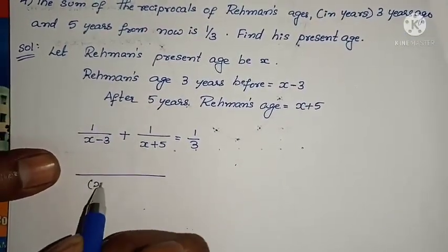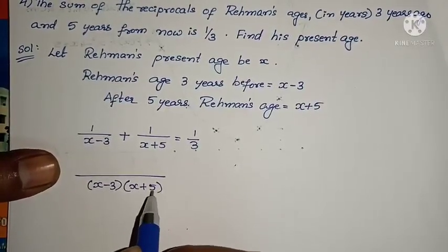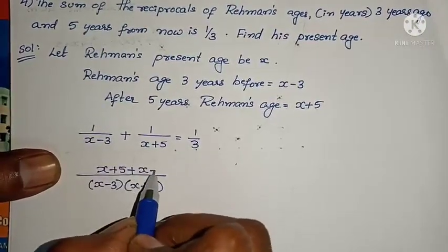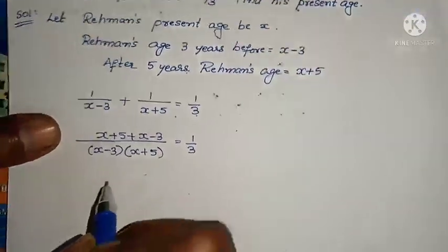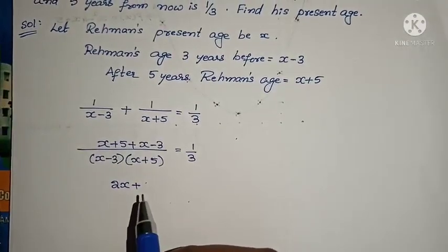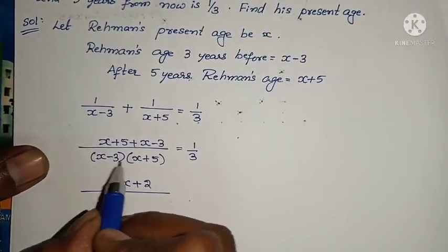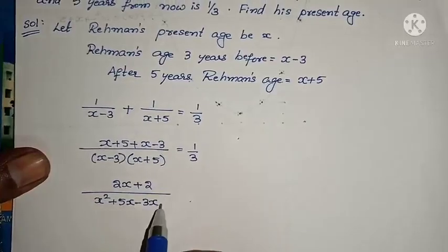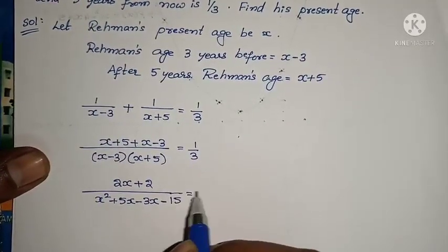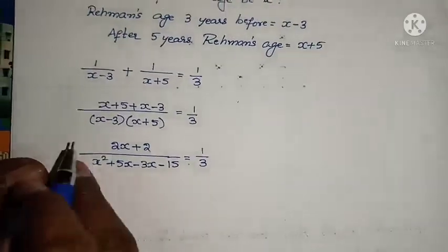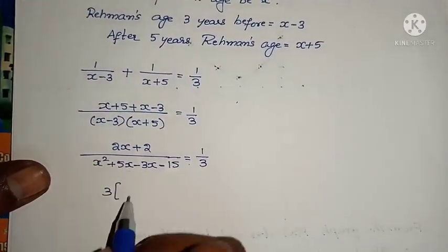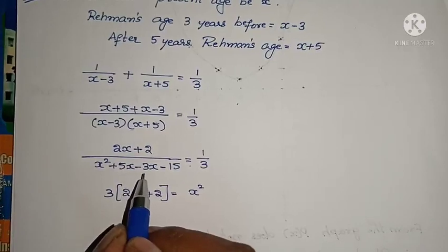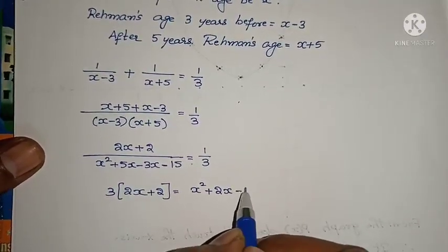Take LCM here. (X minus 3) into (X plus 5) as denominator. Numerator becomes X plus 5 plus X minus 3, which equals 2X plus 2. This equals 1 by 3. Now expand the denominator: X squared plus 5X minus 3X minus 15. Cross multiplication gives 3 into (2X plus 2) equals X squared plus 2X minus 15.